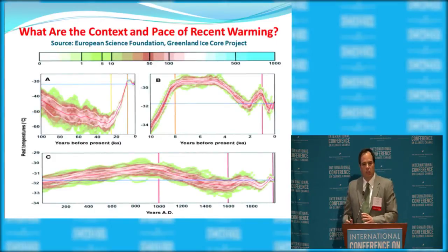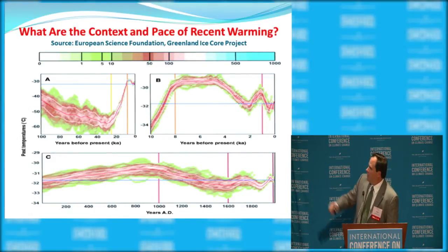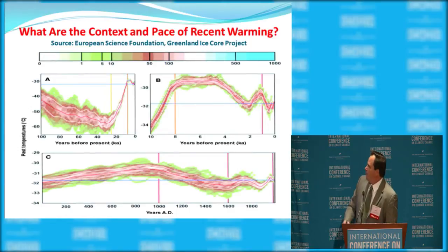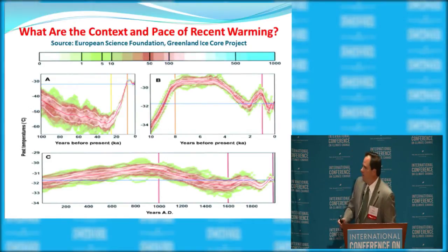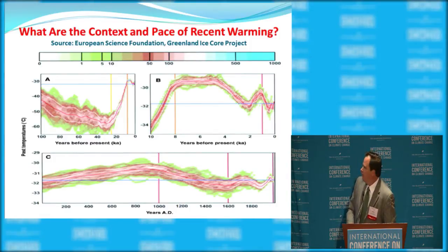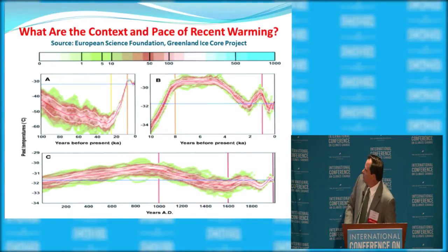This is a fantastic visual — a history of the Earth's temperature. On the top left, going back 100,000 years through the depths of the last ice age. On the top right, the past 10,000 years, and on the bottom, the past 2,000 years. I want you to focus on the top right. Once we emerged from the last ice age, over the past 8,000 years, temperatures have been substantially warmer than today for the vast majority of that time. On the far right you see temperatures today, moving backwards in time as you go left.